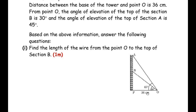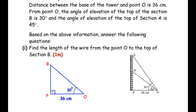To find the length of wire OB, let us focus on triangle OBP. I have redrawn this triangle here. Point P is marked at a right angle because the tower stands perpendicular to the ground, making triangle OPB right-angled at P. The angle of elevation of point B from O is 30 degrees, and the distance OP is 36 cm. Since we need to find OB, we will use a trigonometric ratio.